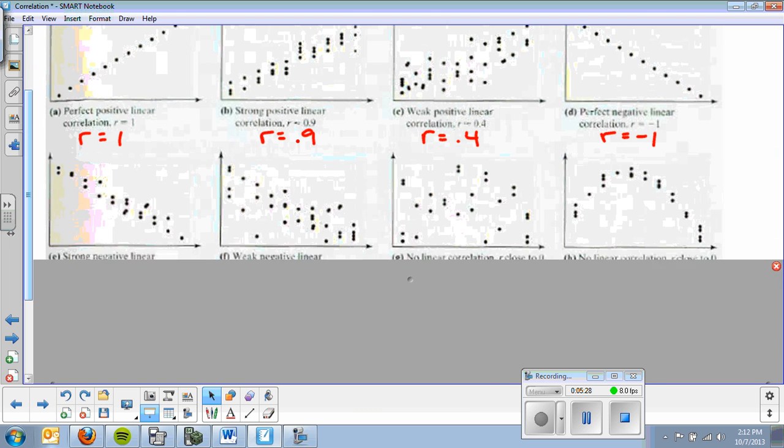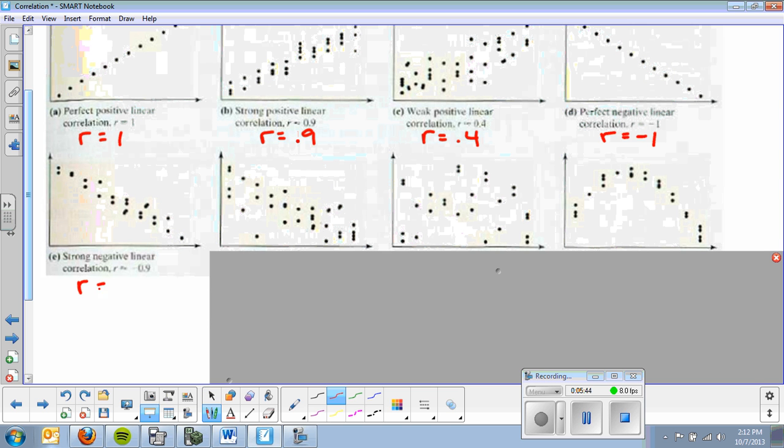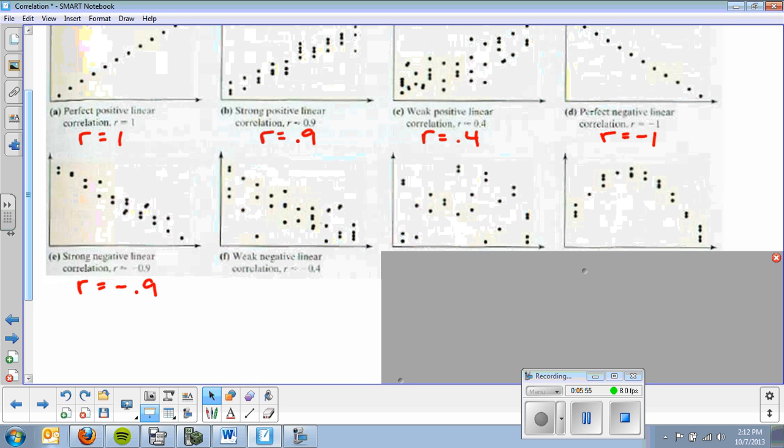Here we have some other examples. We've got this line, or linear - it's not a line anymore, but a linear pattern that's negative, still pretty strong. So we're going to call that a strong negative linear correlation. That's an r of negative 0.9, close to 1, but negative. The next pattern, the dots continue to get more spread out. That rope continues to fray. So I'm going to call that a weak negative correlation. r equals negative 0.4.